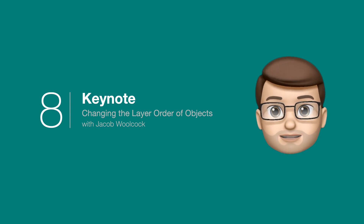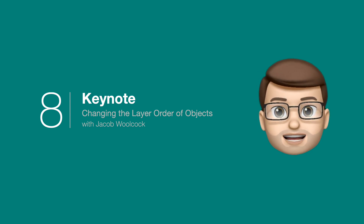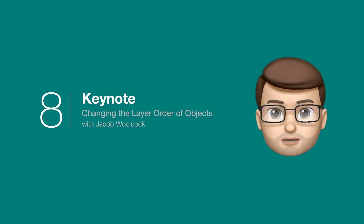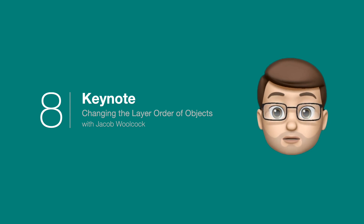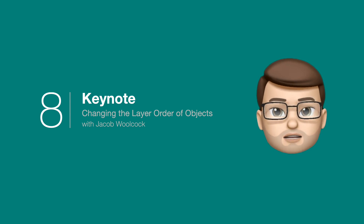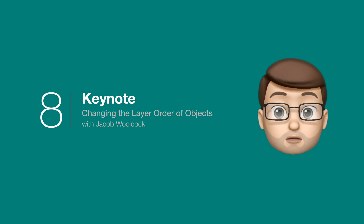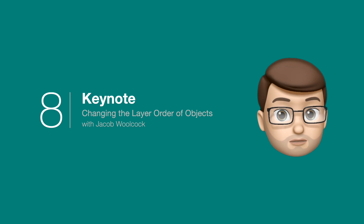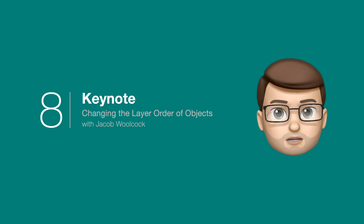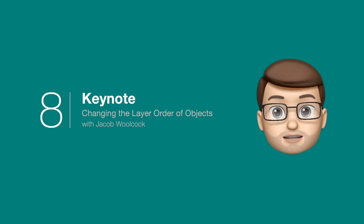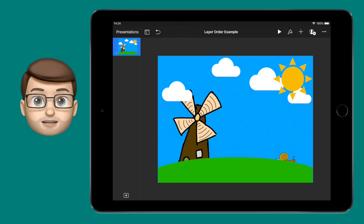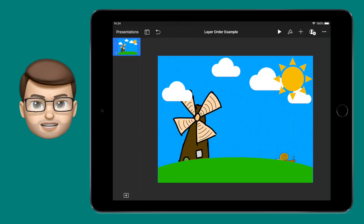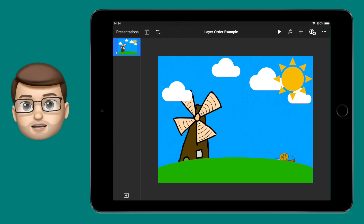For today's video, we're going to have a look at that situation where you've got so much in Keynote that things are overlapping each other and you want to change it around. So let's have a look at moving layers around. As you can see, I've built a little scene here, but the sun is in front of the clouds and that's not right.